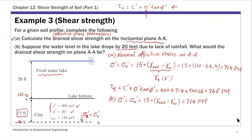Since the effective stress doesn't change, the drained shear strength tau_f stays the same as Part A — 748 PSF. This example shows how to use the Mohr-Coulomb failure criterion to calculate shear strength on any given plane. The key is to calculate the normal stress on that plane; if you know that along with the shear strength parameters, you can predict the shear strength.